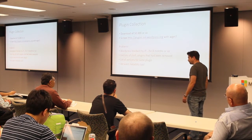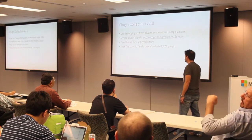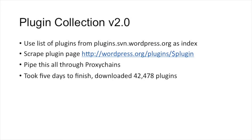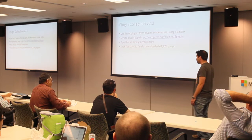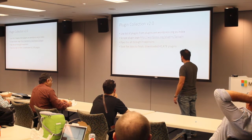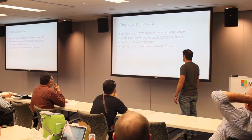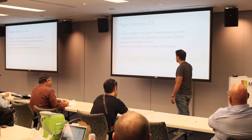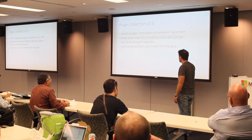I also wanted metadata — tidbits about each plugin. Plugin collection 2.0: I used the list of plugins from the code repository as an index, then scraped each page on the WordPress site for that plugin. I piped it all through proxy chains because I didn't want WordPress to block me again. I let it run for about 5 days and it downloaded 42,478 plugins — about 10 to 15 gigabytes of disk.